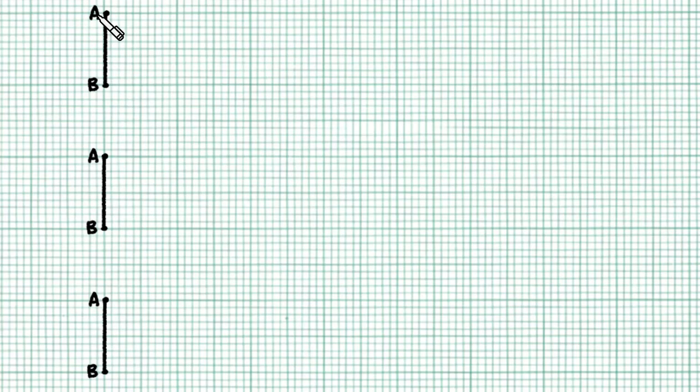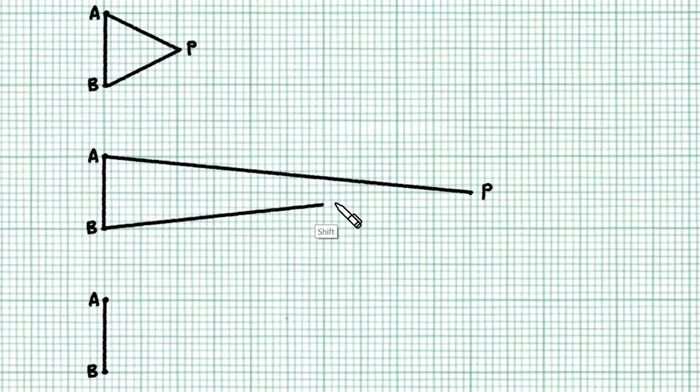To begin, let's have two points A and B. And let me add one more point P so that we have an isosceles triangle. Now, if I move the point P further away, maybe to here, then the isosceles triangle will look sharper, thinner or sharper. Now, tell me, what happens to this angle when the point P is moved further away? It becomes smaller, right?